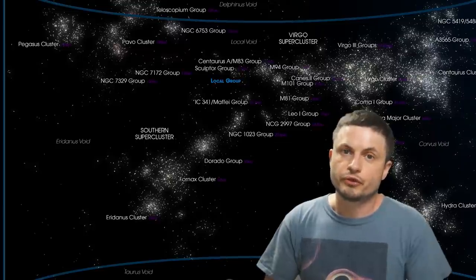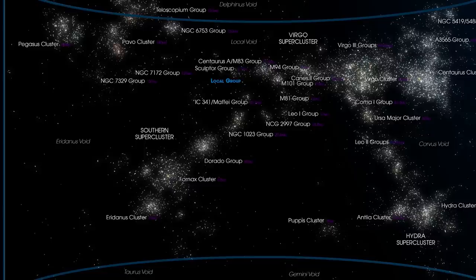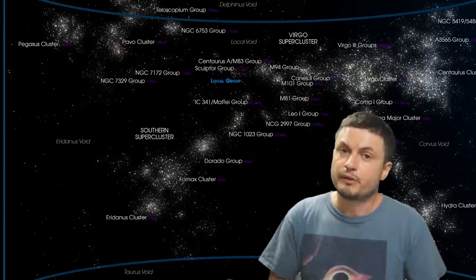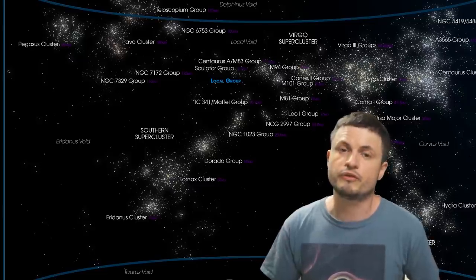Today this is referred to as the Laniakea supercluster. And in a nutshell it kind of looks like this. This is roughly around 500-ish million light years in diameter and includes several superclusters all connected and all once again moving in the same direction.